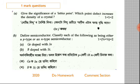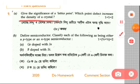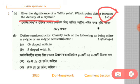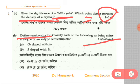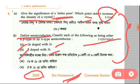Now let's go to 2020 questions. Give the significance of a lattice point. Which point defect increases the density of a crystal? This is a repeat question but asking which increases density instead of decreases. Part B asks to define semiconductor and classify each of the following as either p-type or n-type semiconductor: gallium doped with indium and boron doped with silicon. I will give you these 2020 questions as homework.